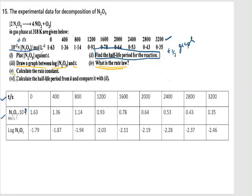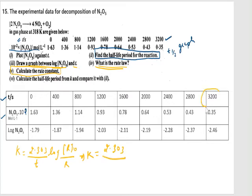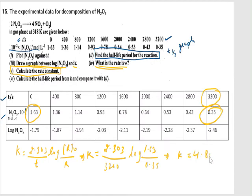After calculating the rate law, I am going to calculate the rate constant K. Since this is a first order reaction, I will use the formula: K = 2.303/T × log(initial concentration / final concentration). Taking T = 3200 seconds, initial concentration = 1.63, and final concentration = 0.35, and calculating these values, we get K = 4.808 × 10⁻⁴ s⁻¹.